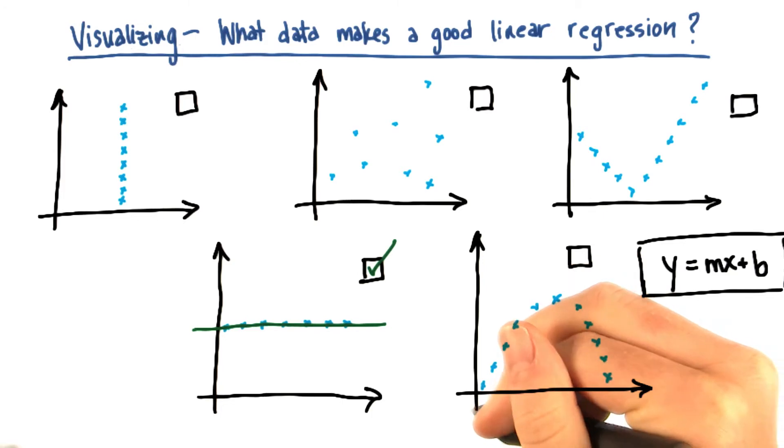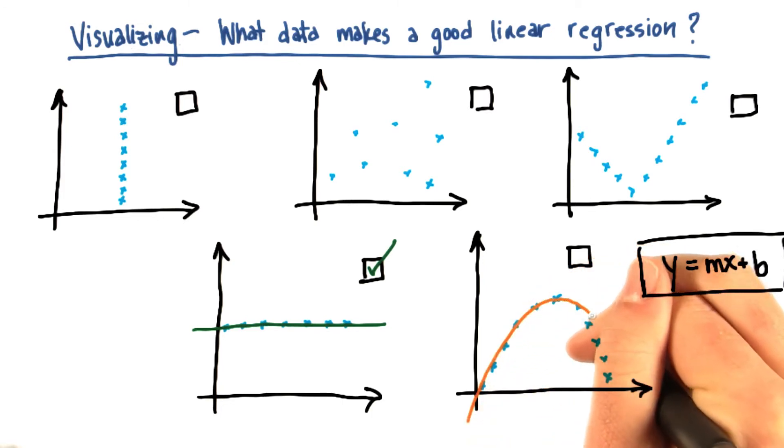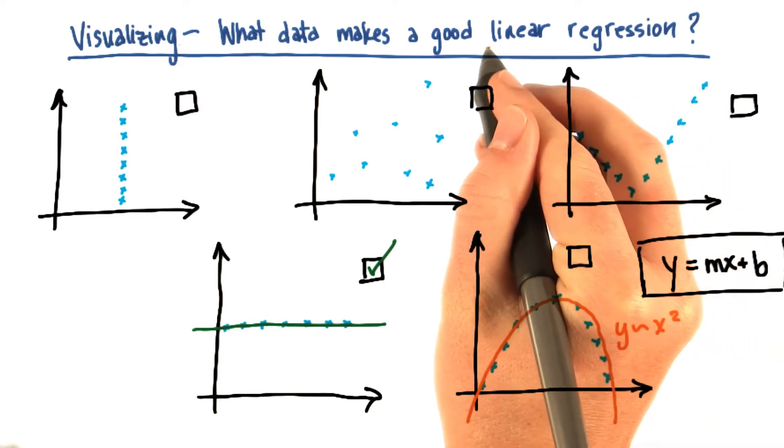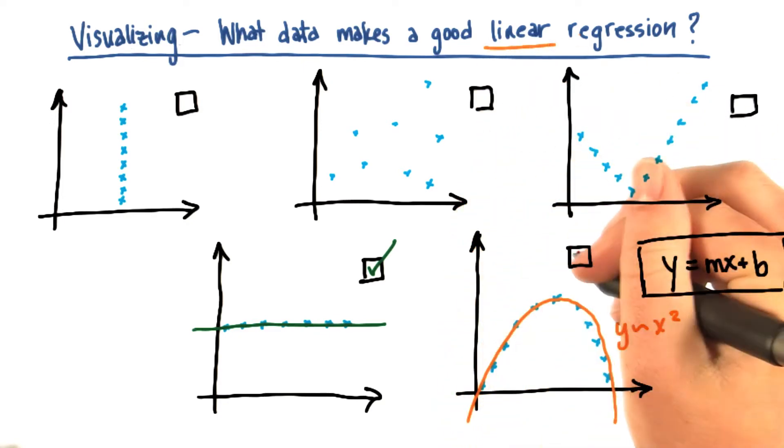Let's start with this one on the lower right. It'd be pretty easy to think of a function that might fit it nicely, but this function would be something like y equals x squared, which is not of the form y equals mx plus b. In other words, this isn't a line, this is more of a curve. There are ways that you can fit these functions, but it wouldn't be an example of linear regression. So that's why this would not be a good candidate for linear regression.